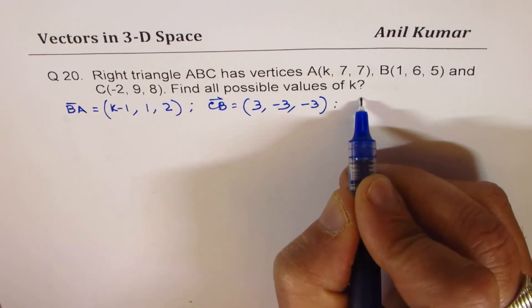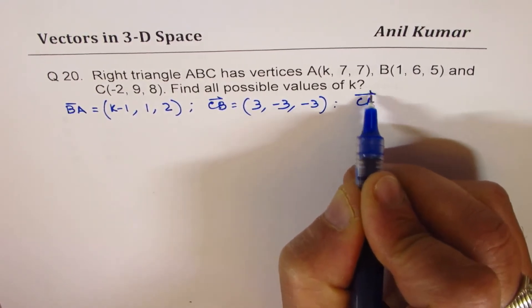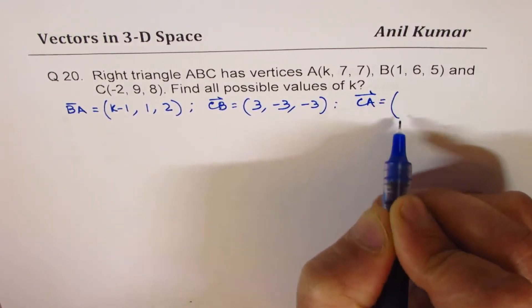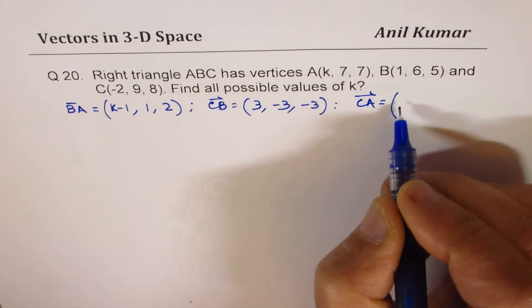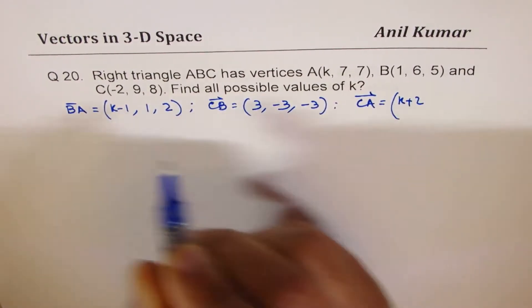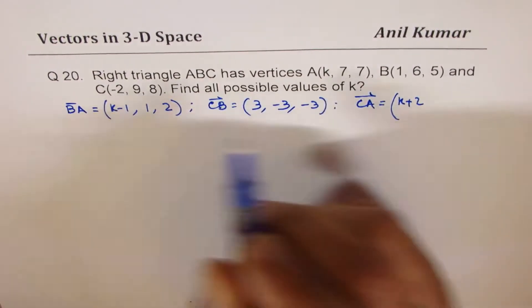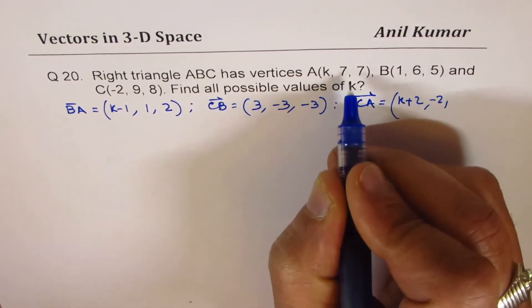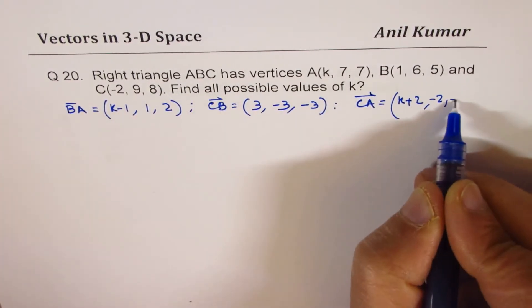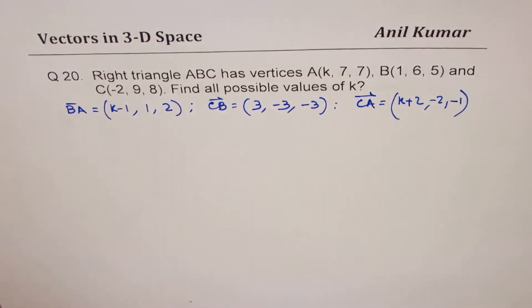And now let's say CA is what? CA is K minus −2 is K plus 2, and 7 minus 9 is minus 2, 7 minus 8 is minus 1. Okay, so these are the sides of my triangle.